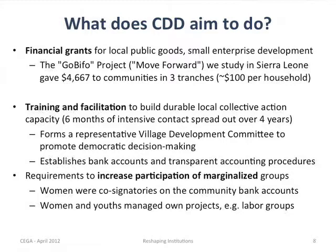The third component involved attempts to increase representation by marginalized groups. The two key marginalized groups in these villages were women — who were basically excluded from chiefly authority and very rarely spoke up at village meetings — and youth, typically considered people under about 35 in Sierra Leone. The resentments of youth at their exclusion from local authority was seen as a contributor to violence during the war. Women had to serve on the village development committee, be co-signatories on the bank account, and pots of money were set aside for projects led by women and youth.